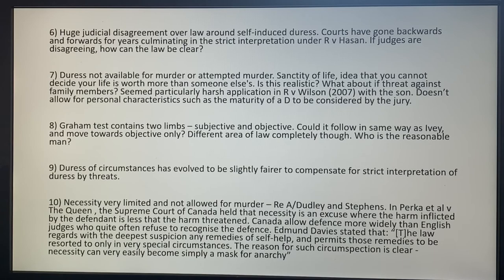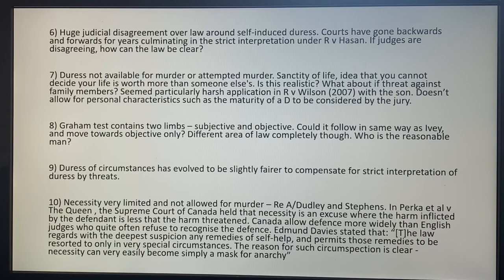Number seven: duress is not available for murder or attempted murder. It's based on sanctity of life — you can't decide your life is worth more than someone else's, going back to religious ideas that only God can decide that. But is that really realistic? What if the threat is against your own family members? Also seems particularly harsh in cases like RV Wilson — the 13-year-old boy — where it doesn't allow for personal characteristics such as maturity to be considered, and he essentially faced mandatory detention at Her Majesty's pleasure.